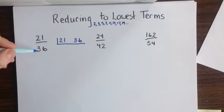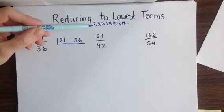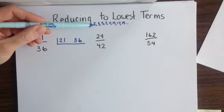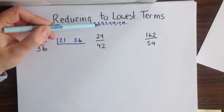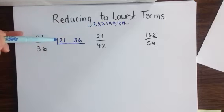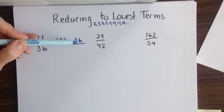So to reduce the fraction 21 thirty-sixths, we begin by looking at the factor of 2. Now since 2 won't fit into 21, because 21 is even, we're going to skip that one and go on to 3. 3 does fit into 21, and also fits into 36.